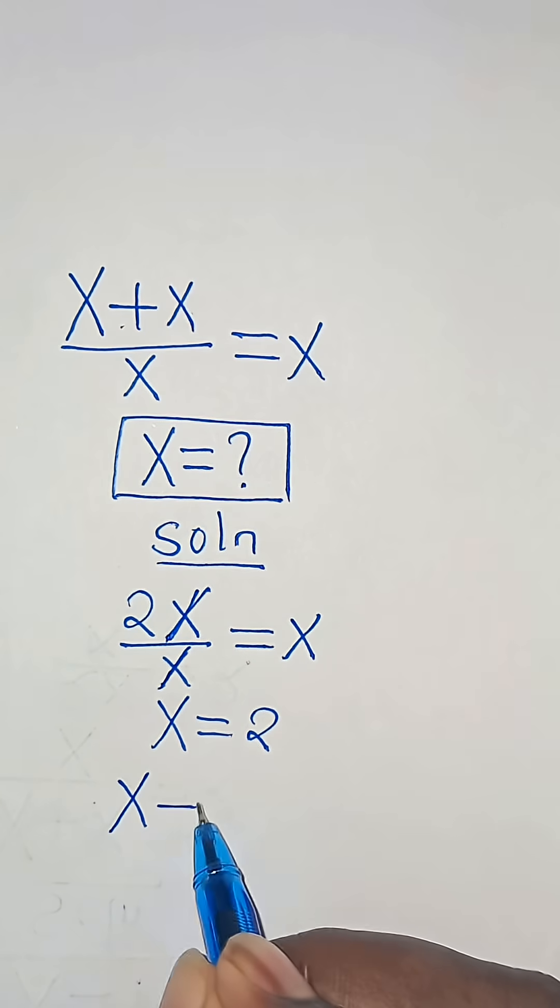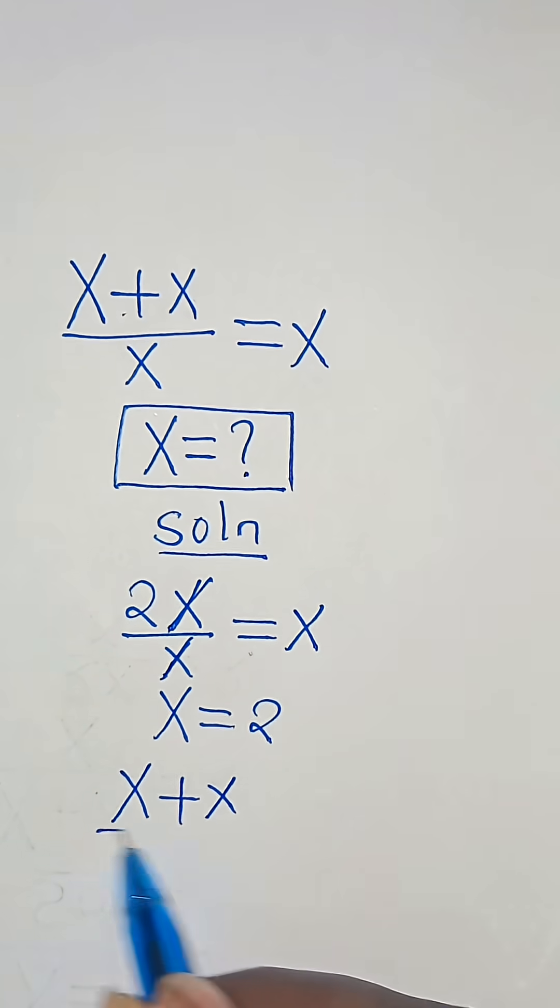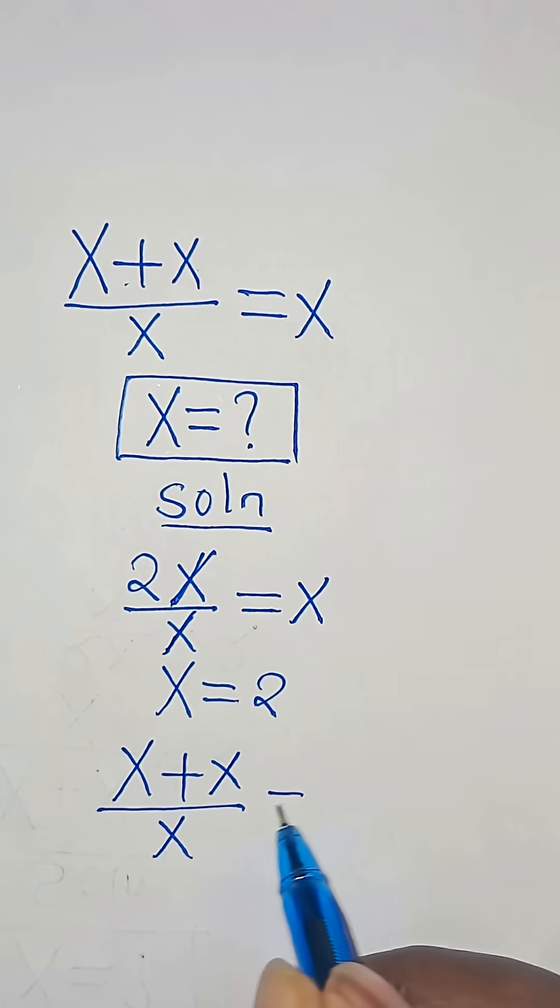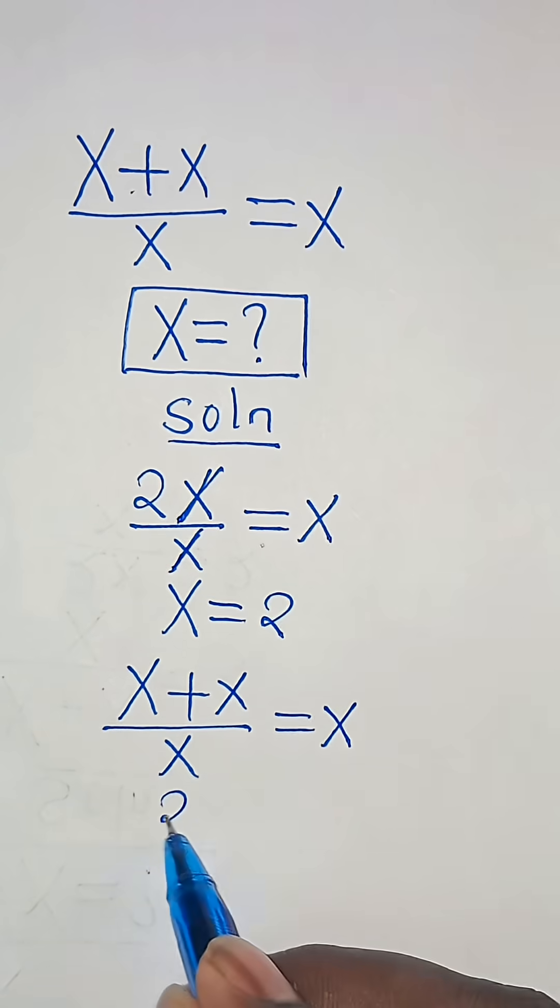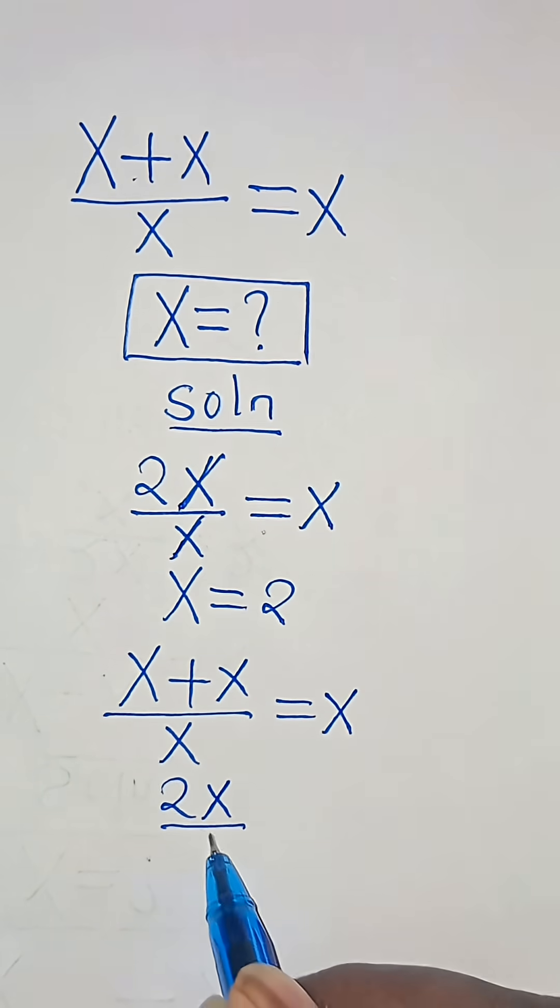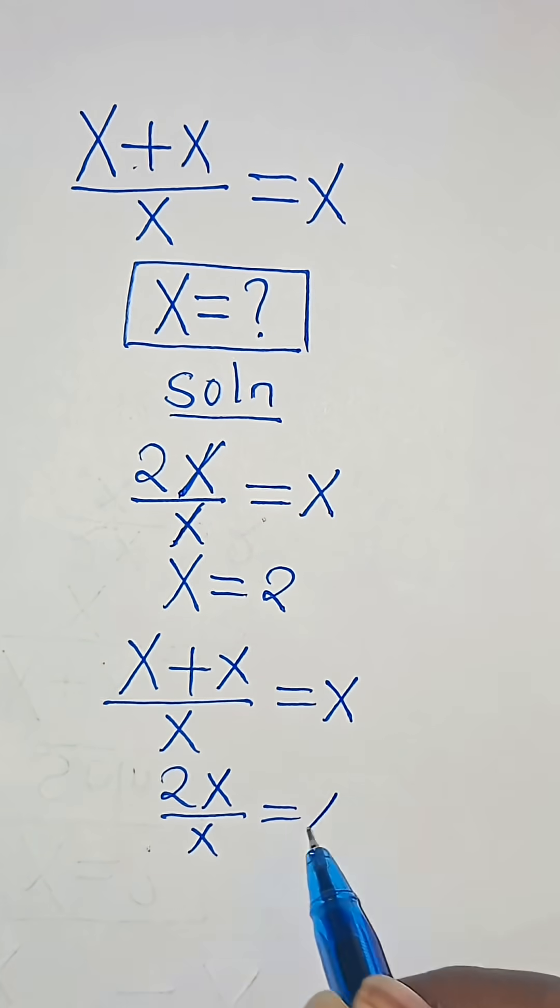So we have x plus x over x, this is equal to x. So x plus x, this is 2x divided by x, this is equal to x.